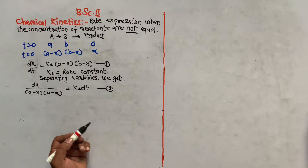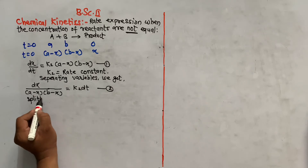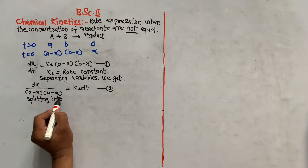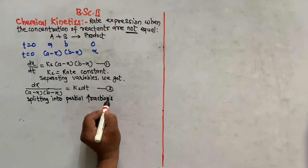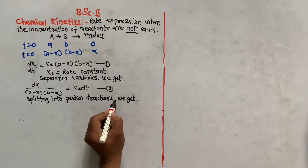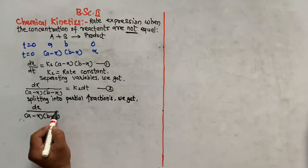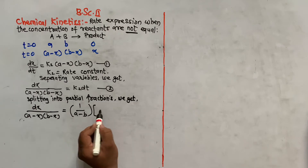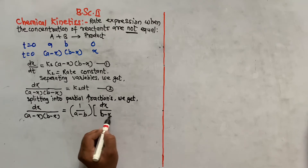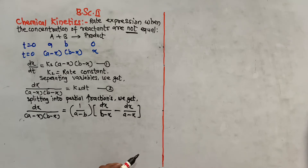We cannot integrate this directly, so splitting into partial fractions. Splitting dx / [(a - x)(b - x)] into partial fractions gives: 1/(a - b) × [dx/(b - x) − dx/(a - x)].